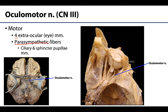The oculomotor nerve originates from the midbrain, runs in the lateral wall of the cavernous sinus, and enters the orbital region through the superior orbital fissure, where it splits into superior and inferior divisions. The superior division has been removed here so we can see a nice view of the inferior division within the orbital region.